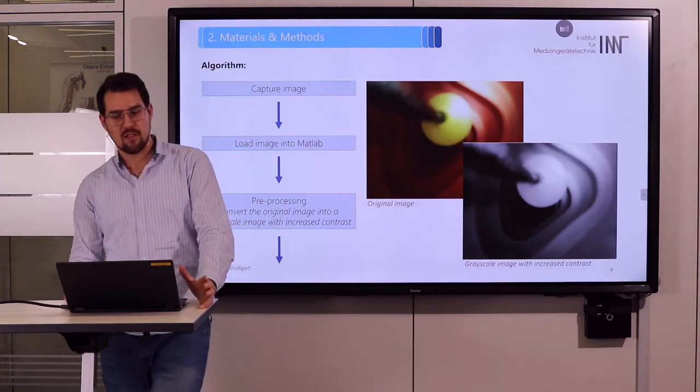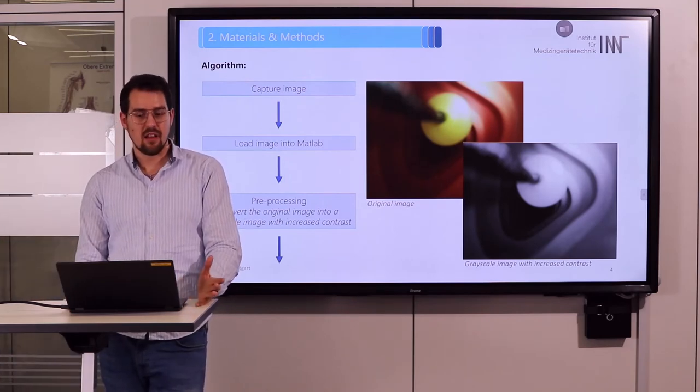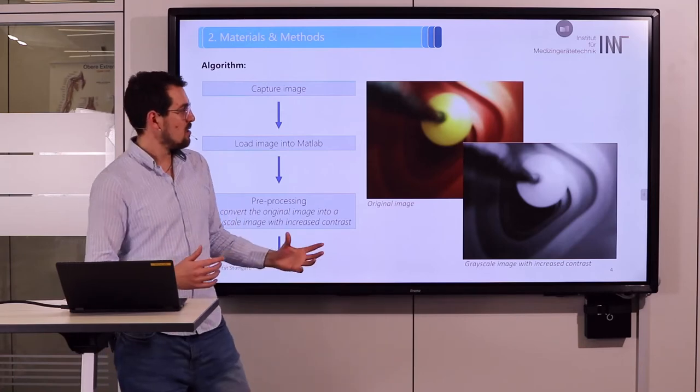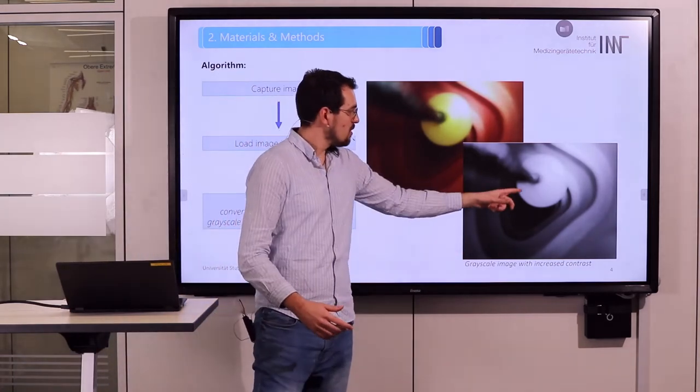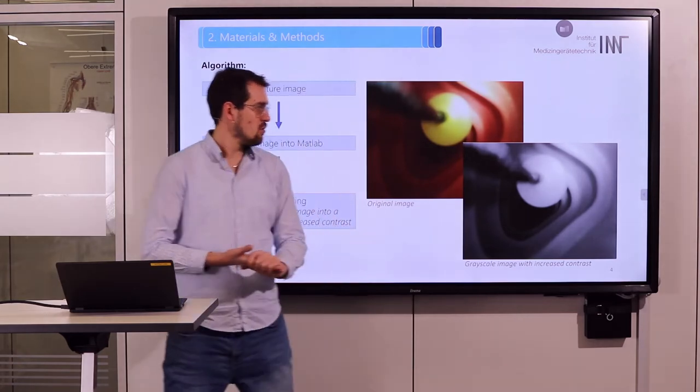On this increased contrast image we perform a Hough transformation. This allows us to identify geometric figures, which in our case is a circle because the balloon looks like a circle in the two-dimensional image.